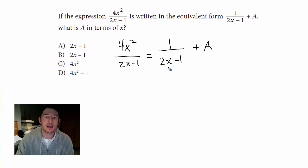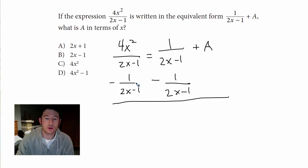And one thing I like is that they both have the same denominator. So I'm actually going to subtract this one away from the A so I can get everything on the same side. Minus 1 over 2x minus 1.